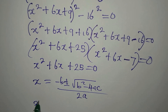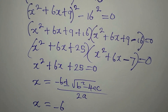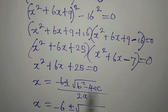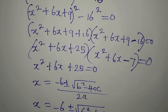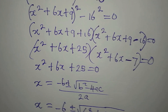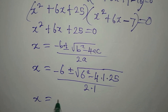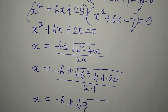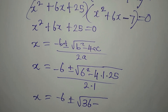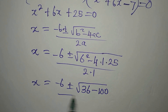Our x will be equal to −b, which is −6 because b = 6, plus or minus √(b² − 4ac). That is √(6² − 4 × 1 × 25), all over 2 × 1. So x = −6 ± √(36 − 100) all over 2.